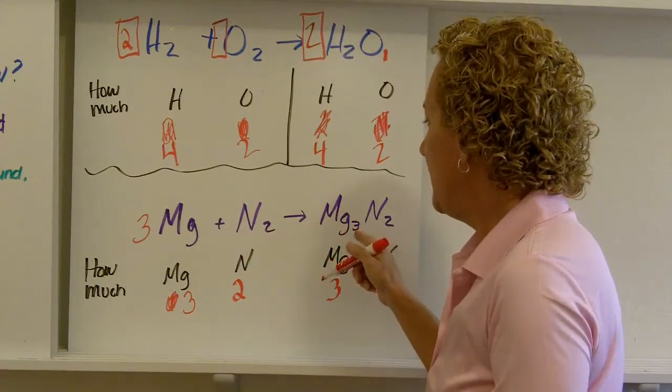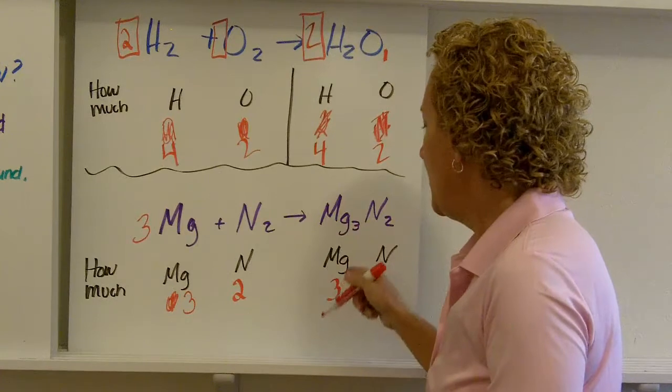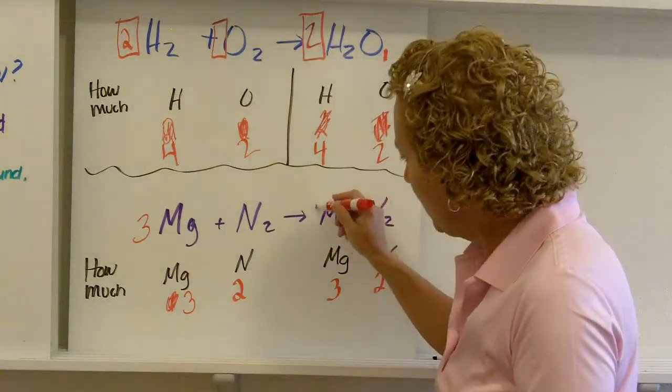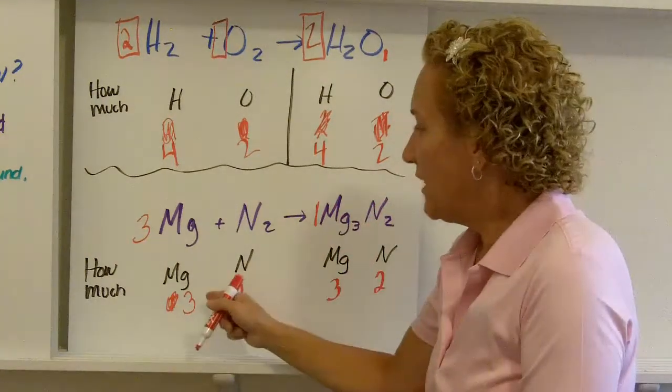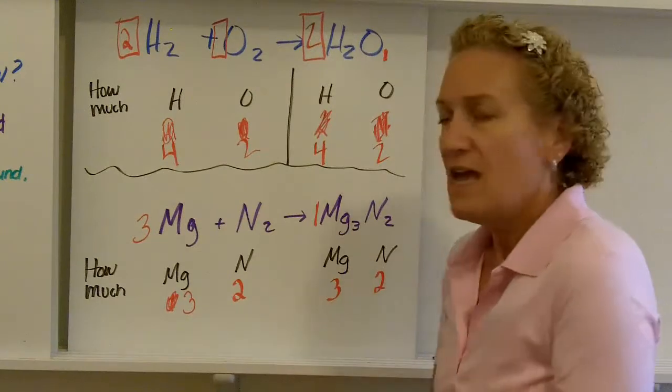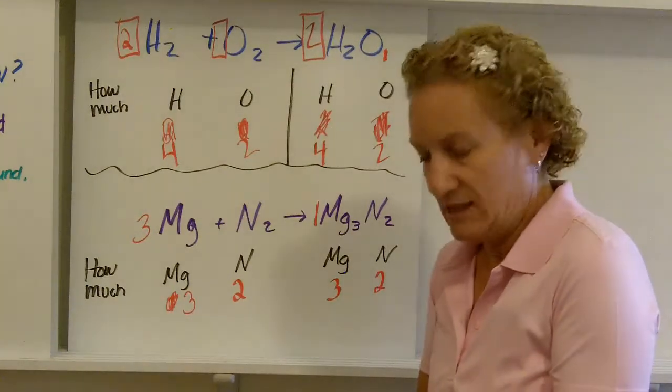One times two is two. How much magnesium? Three. One times three is three. How much nitrogen? Two. One times two is two. Because remember we have that invisible one right there. Okay. So I have three magnesiums, three magnesiums, two nitrogens, two nitrogens. And I can say that that equation is indeed balanced.